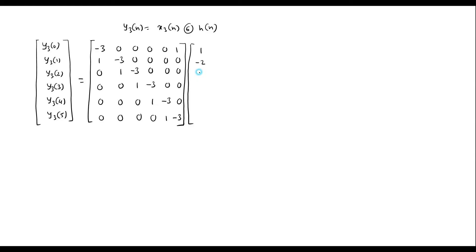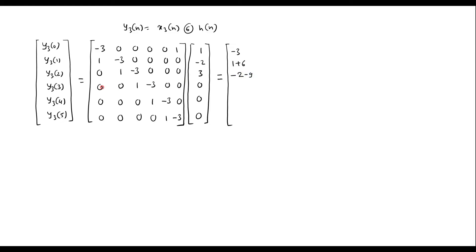After completing the matrix multiplication for y3, computing row by row: minus 3; then 1 plus 6 giving 7; then minus 2 minus 9 giving minus 11; then 3; then 0; then 0. Simplifying, y3 of n equals: minus 3, 7, minus 11, 3, 0, 0.